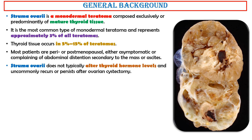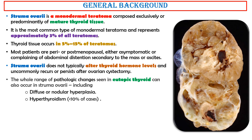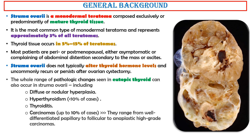Struma ovaryi does not typically alter thyroid hormone levels and uncommonly recurs or persists after ovarian cystectomy. The whole range of pathologic changes seen in eutopic thyroid can also occur in struma ovaryi, including diffuse or nodular hyperplasia, hyperthyroidism in less than 10% of cases, thyroiditis, carcinomas in up to 10% of cases — ranging from well-differentiated papillary to follicular to anaplastic high-grade carcinomas — and malignant lymphomas.